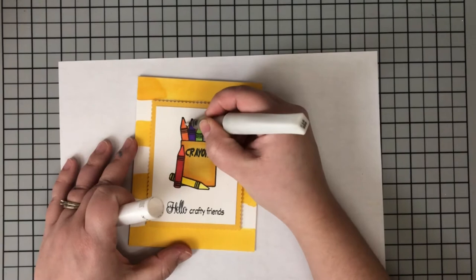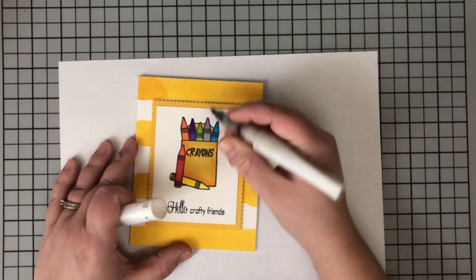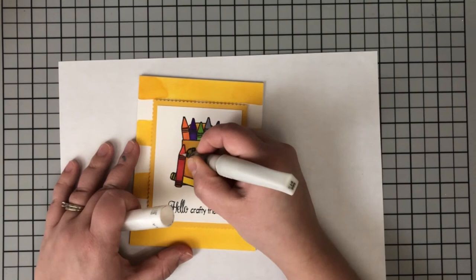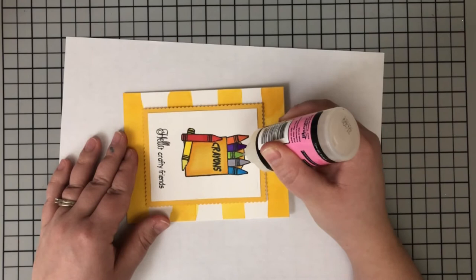So I grabbed my Wink of Stella clear brush pen. I do have a video about refilling this. I'll leave that linked in the top right-hand corner. I remember sometimes I don't, a lot of times I don't remember. But I'm just going to go ahead and place a nice layer of that over all of the crayons. Now because I use the Catherine Pooler ink, this also plays really well with watercolors, so I can get away with that. If I was using Memento or something like that, you need to be a little bit careful and stay away from those black lines.